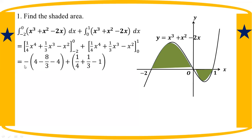Okay, number 1: 2, 2. Number 2. Number 3. It's 4. Number 4: lower limit minus 2, minus 2, minus 8 by 3, minus 2 plus 4, minus 4.